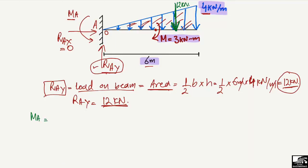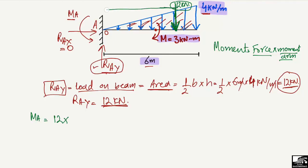The moment at A is equal to the force times the moment arm. The force here is 12 kilonewtons. So the summation of moments at A equals 12 kilonewtons multiplied by the moment arm R, where R is the perpendicular distance from the centroid of the triangular load to point A.